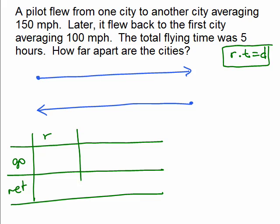We've got something for the rate and the time and the distance. Going, the rate was 150 and returning, the rate was 100, so that was given.